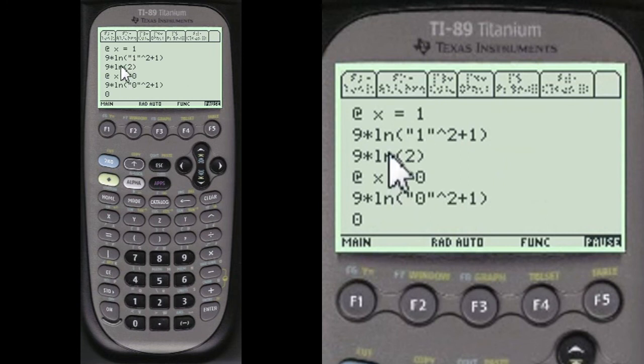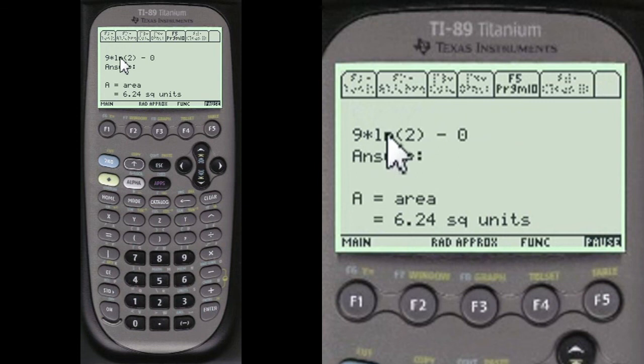At x equals 1, this is the answer. 9 times log of 2. And x equals 0, 9 times log of 0 x squared plus 1, which equals 0.